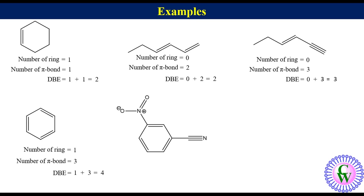3-nitrobenzonitrile, here number of ring is equal to 1. There are 2 pi bonds in nitrile group and 1 in nitro and 3 in benzene ring. So the number of pi bonds is equal to 6. So DBE is equal to 1 plus 6 is equal to 7.